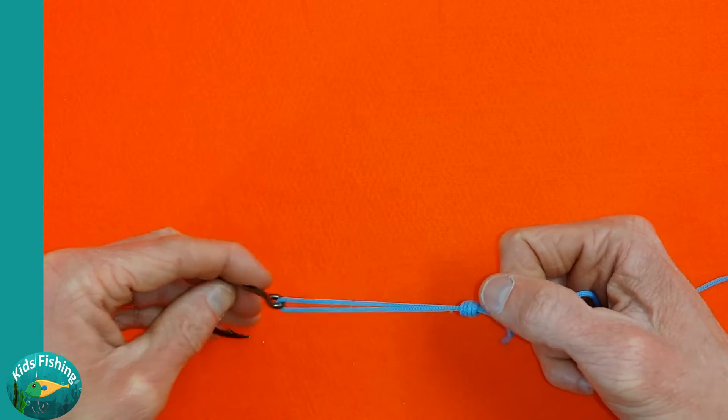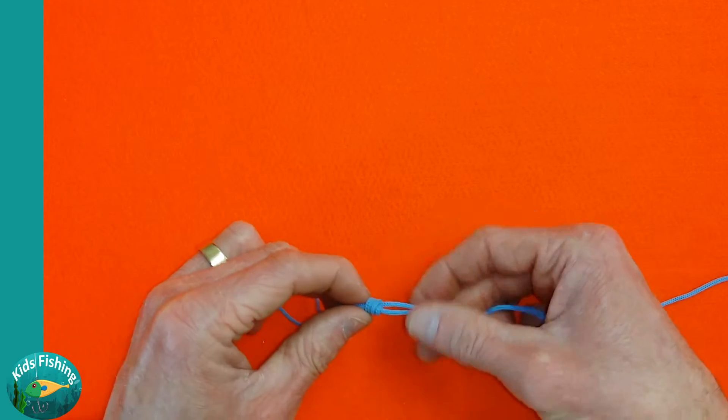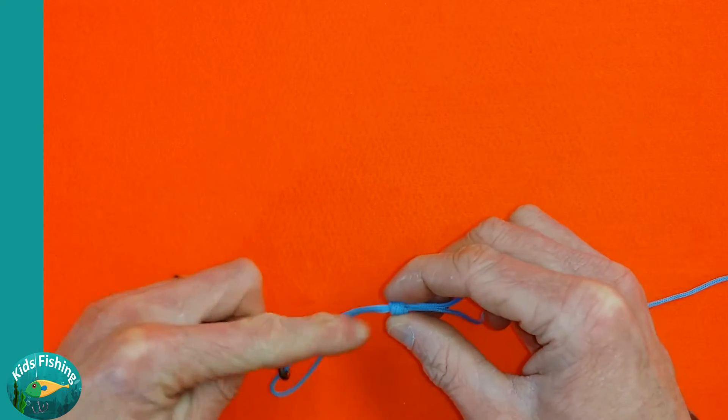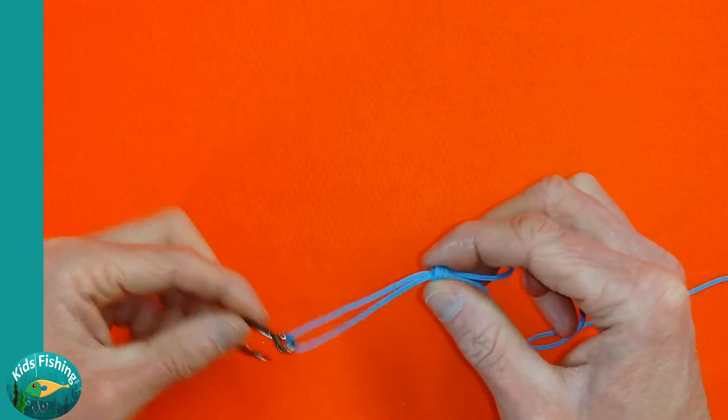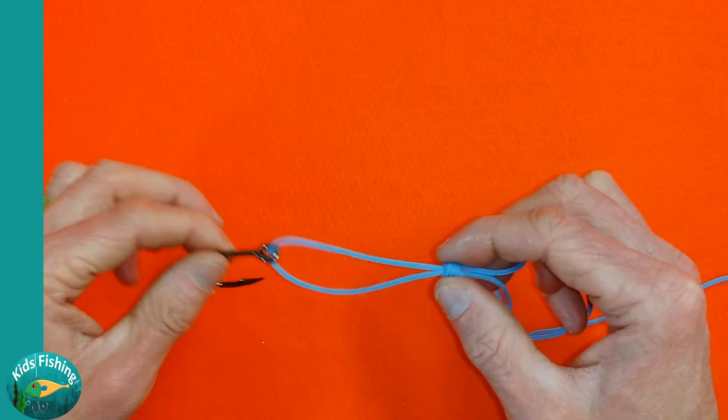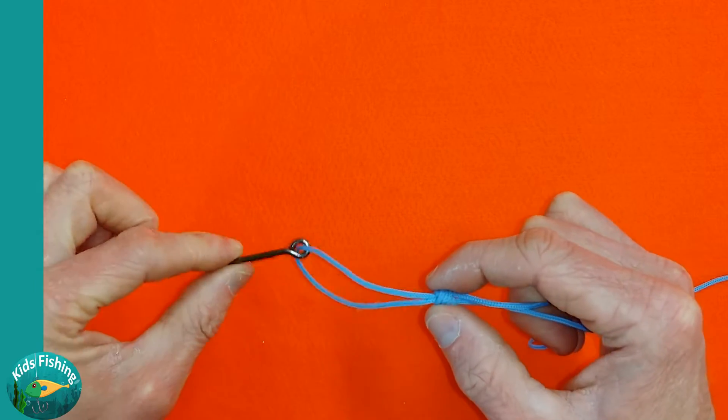Now one of the great things about this particular knot is it gives you a couple of options. You can leave the knot where it is and pull the tag end down and tighten that up, and that will leave a loop which allows your hook or your lure to move freely and create some life-like action.